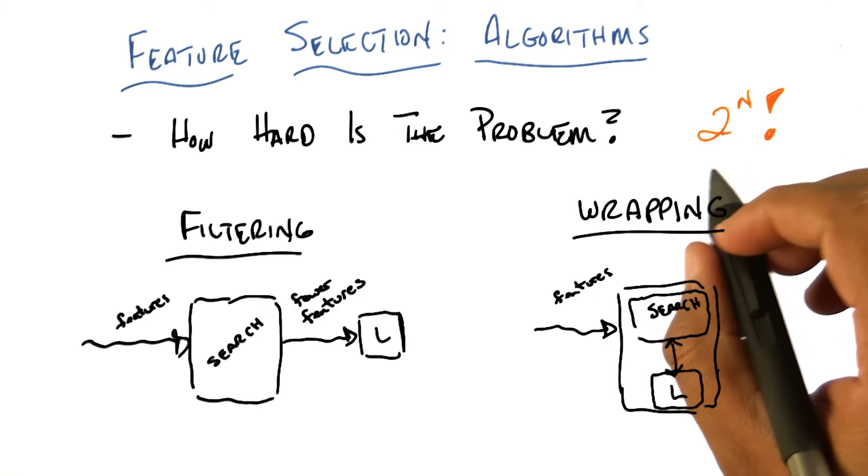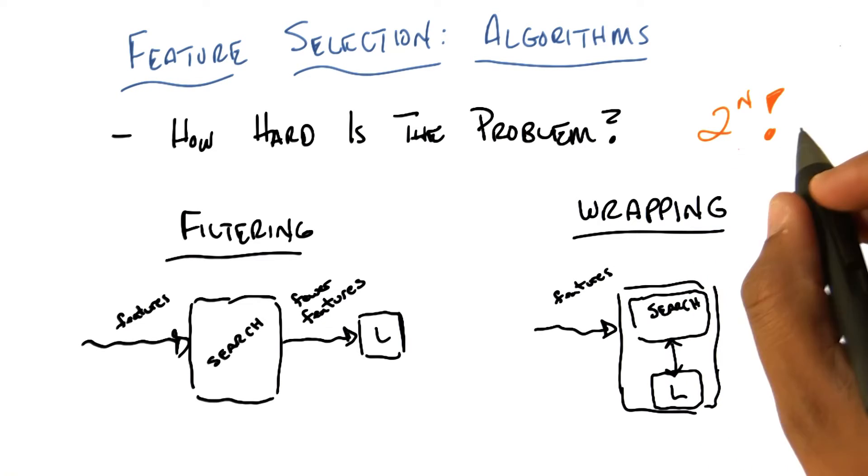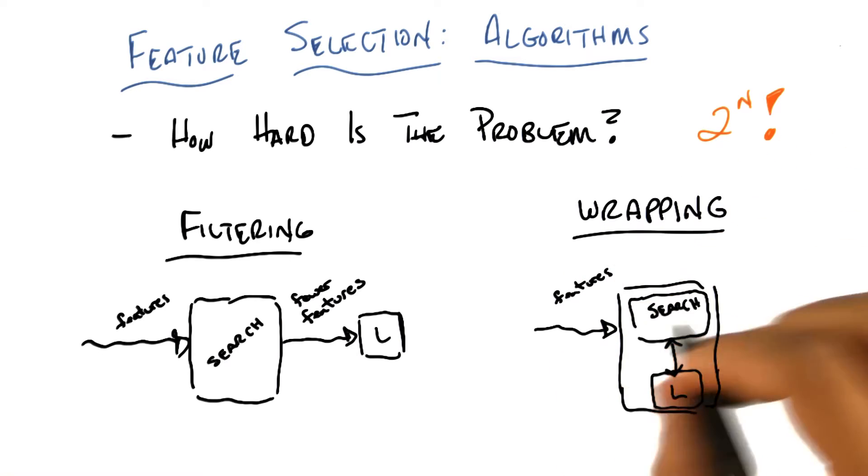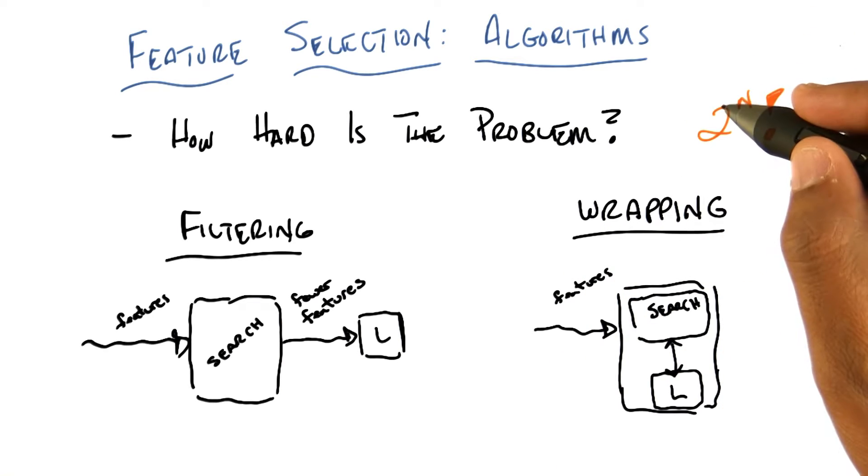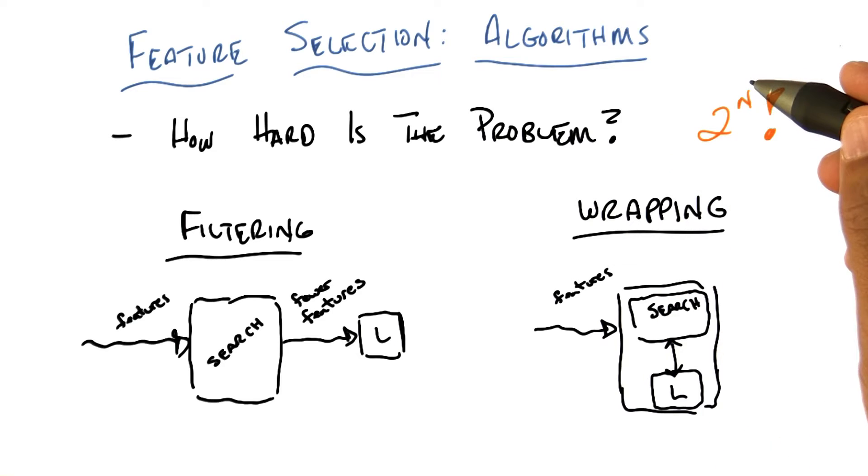Okay, so we agreed, Michael, that the problem is pretty hard. It's exponential in the number of features, in this case n. And there's sort of two general approaches that people have used to try to attack this problem.